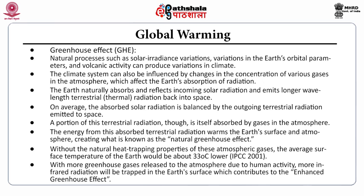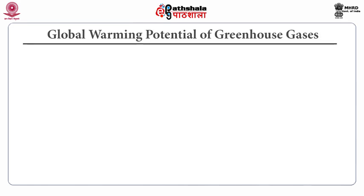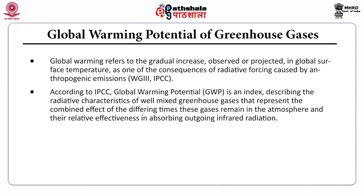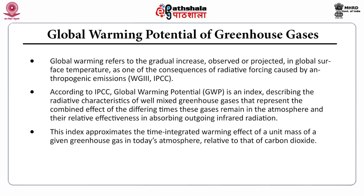We have two types of greenhouse effect: natural greenhouse effect and enhanced greenhouse effect. Global warming refers to the gradual increase observed or projected in global surface temperature as one of the consequences of radiative forcing caused by anthropogenic emission. According to IPCC, that is the Intergovernmental Panel on Climate Change, Global Warming Potential is an index describing the radiative characteristics of well-mixed greenhouse gases that represents the combined effect of the differing times these gases remain in the atmosphere and their relative effectiveness in absorbing outgoing infrared radiation. This index approximates the time-integrated warming effect of a unit mass of a given greenhouse gas relative to that of carbon dioxide.